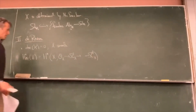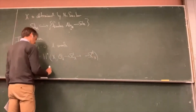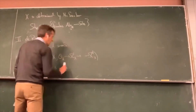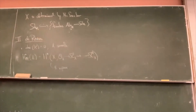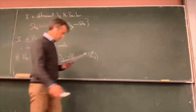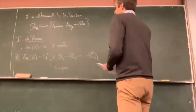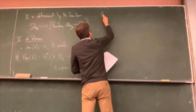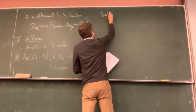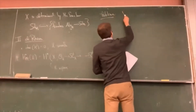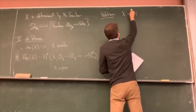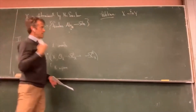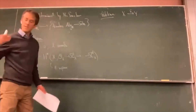So that's what de Rham cohomology is — it's a vector space over k. That's a perfectly fine definition. There's also a relative version: suppose you have a smooth morphism — intuitively it's a morphism whose fibers are smooth, a parameter space of smooth fibers. Then you can also define a relative version by taking the higher direct images of the relative de Rham complex.